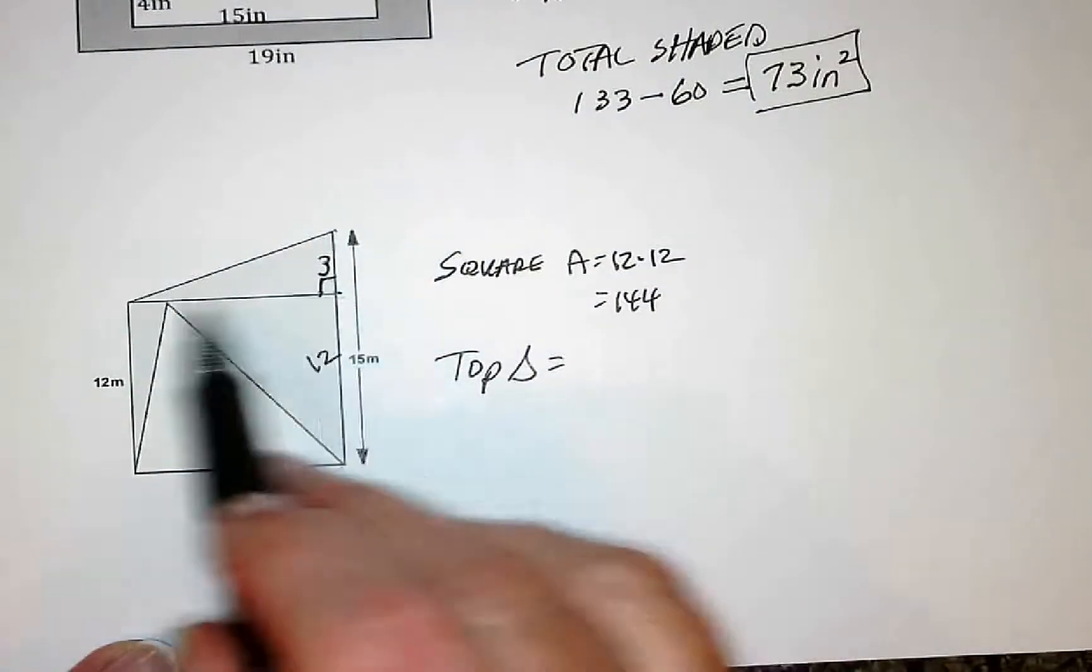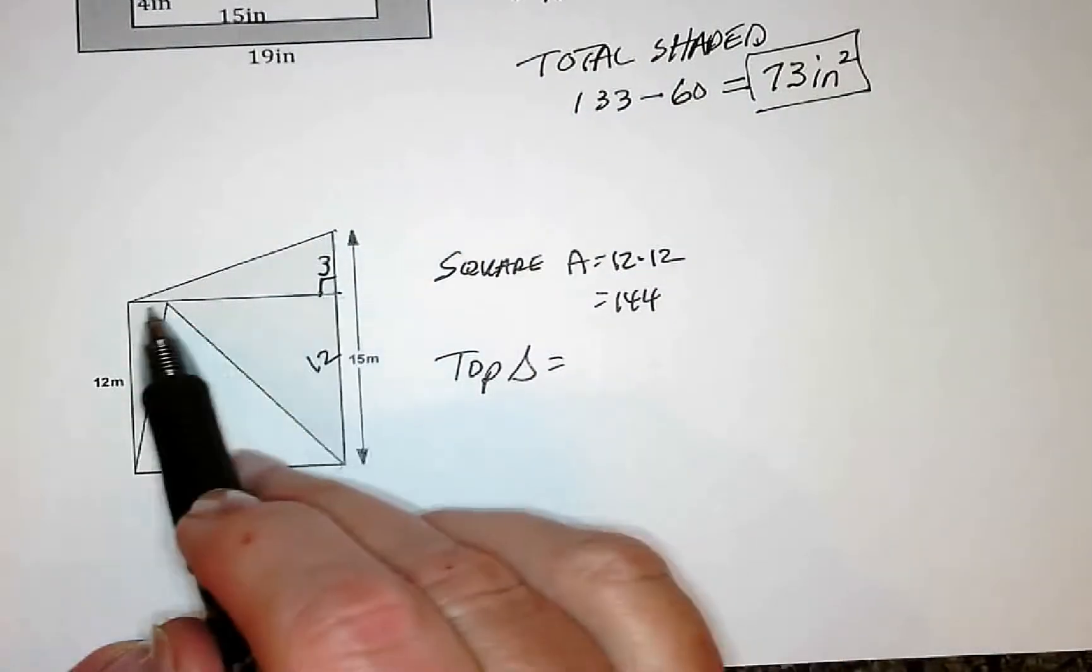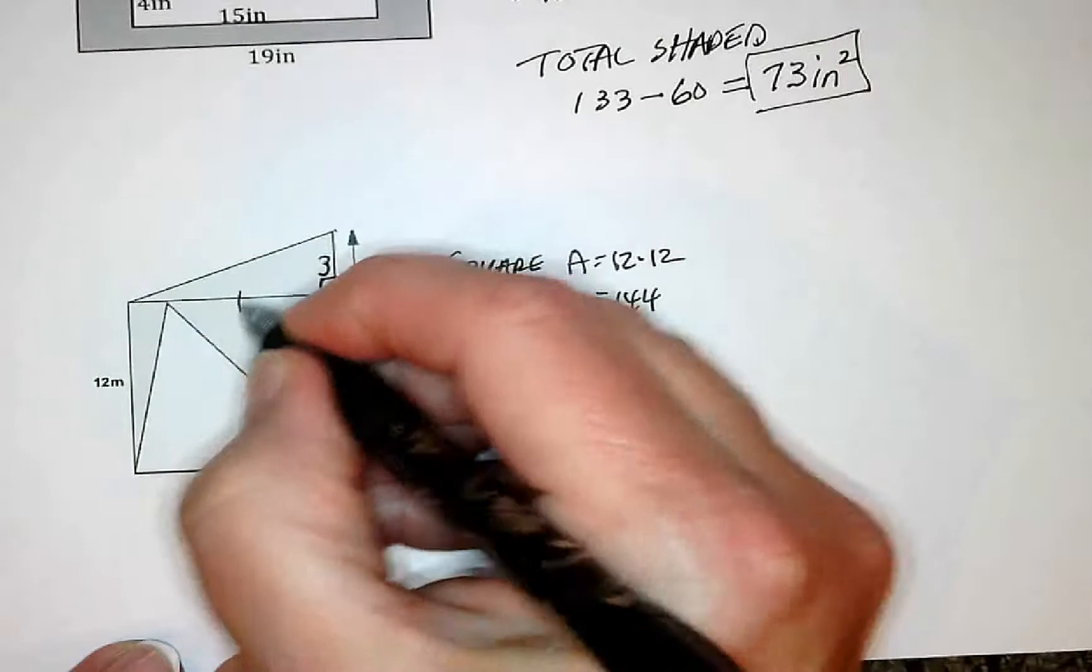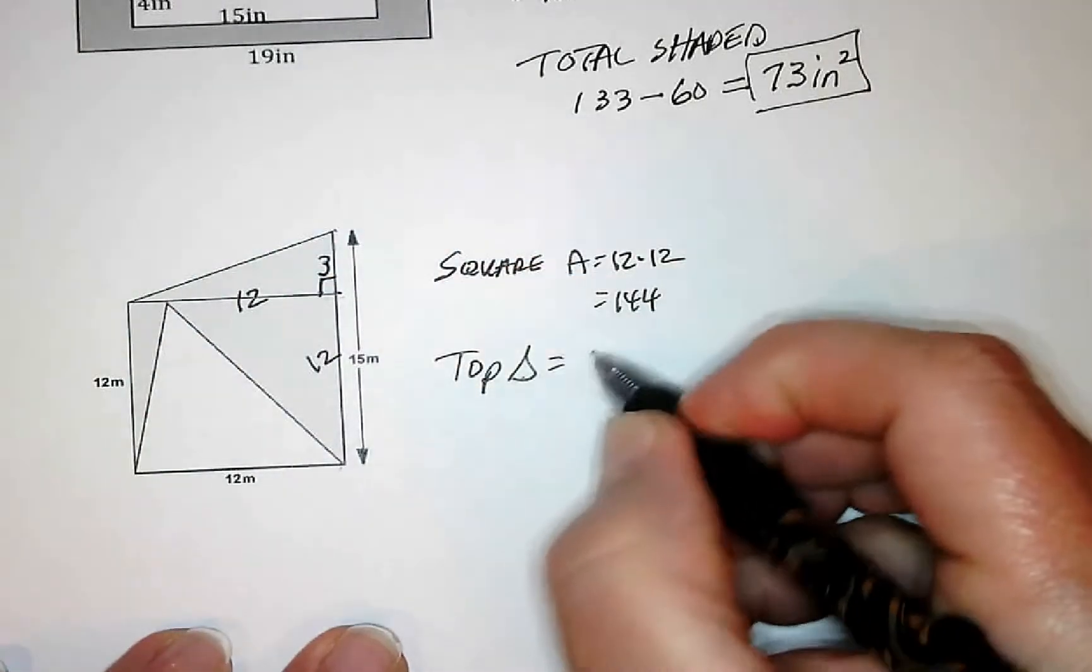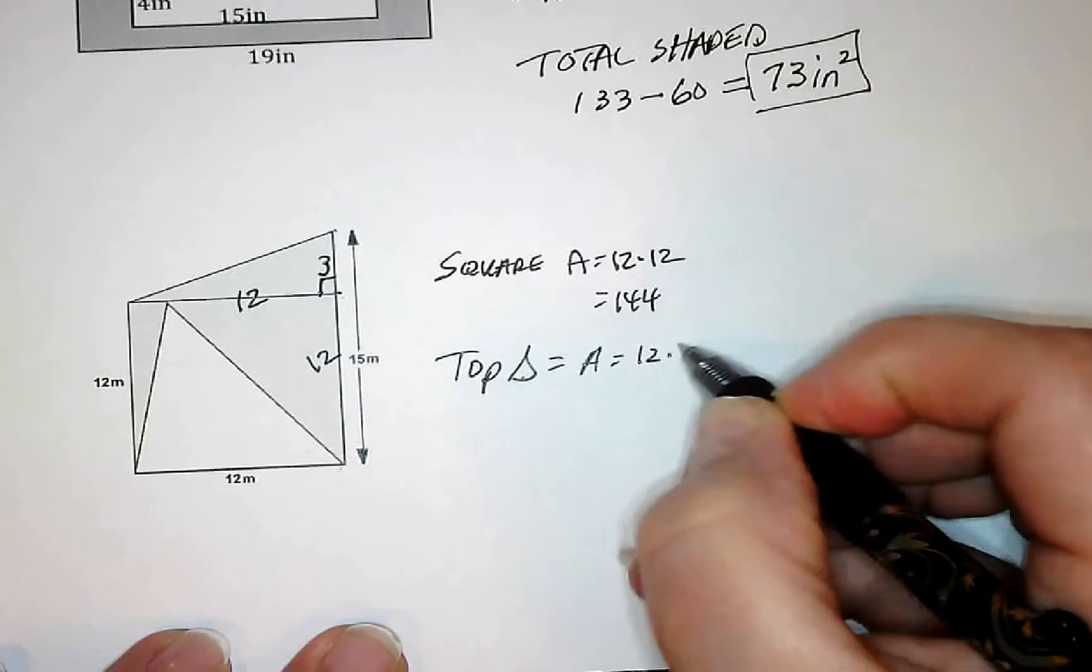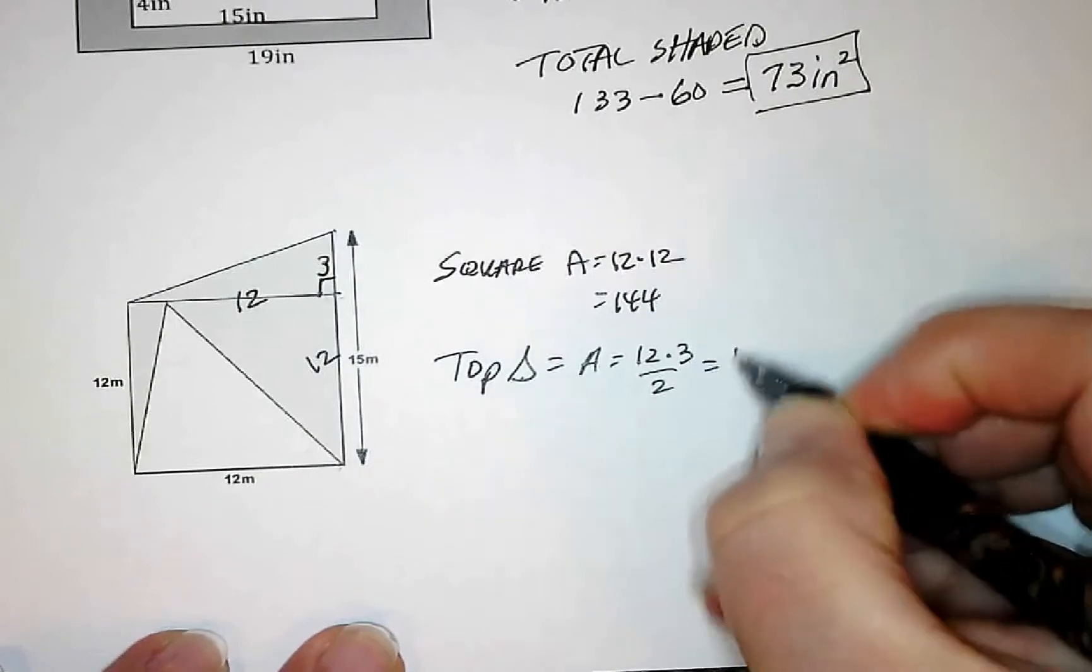I also know that this side of the triangle is also the side of the square. That is going to be 12. So the dimensions that I need for the triangle area is going to be 12 times 3 divided by 2, which is 18.